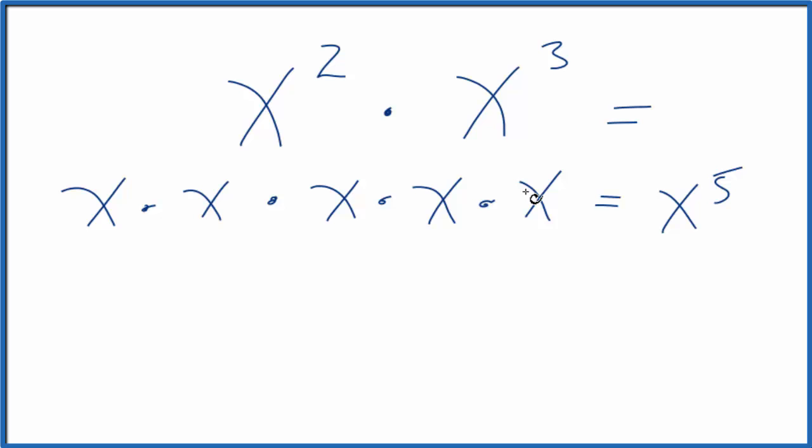The other way is to use the product rule for exponents. That just says when we have the same variable, we have x here and here, we would say x, and we just add the two plus the three, and that would give us x to the fifth.